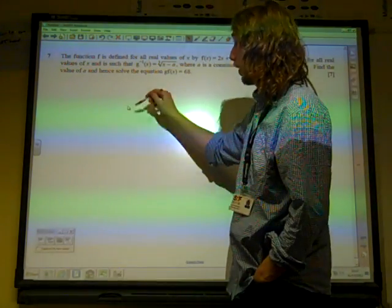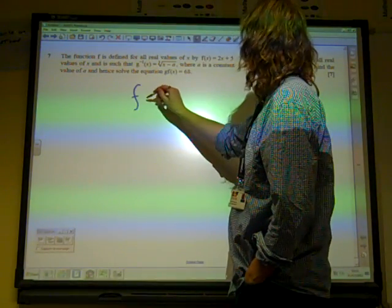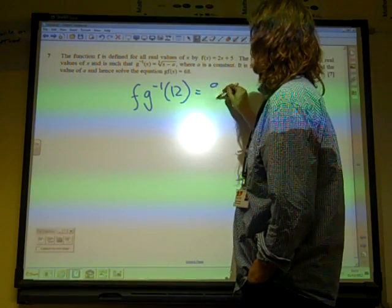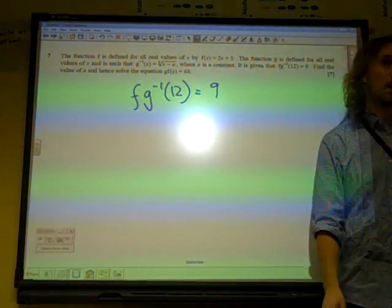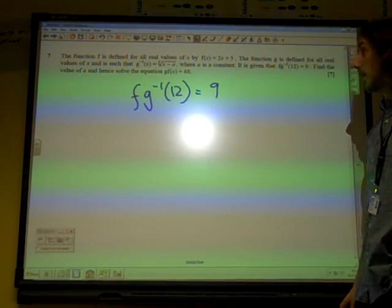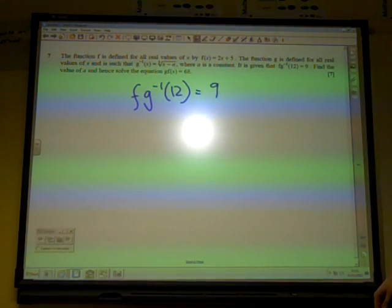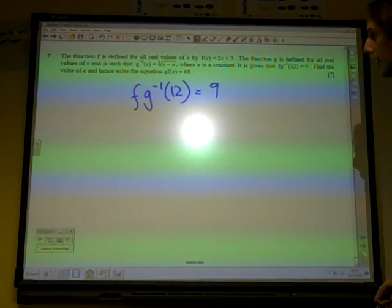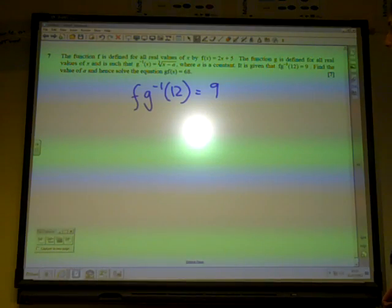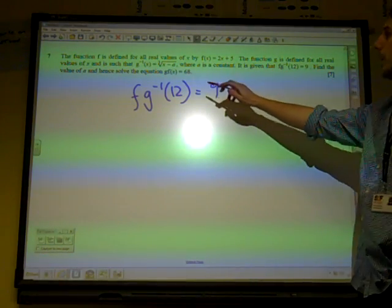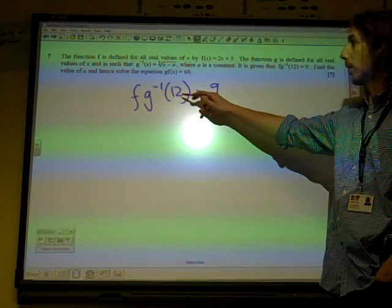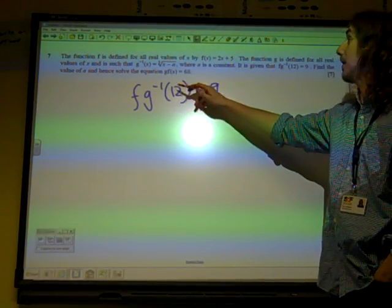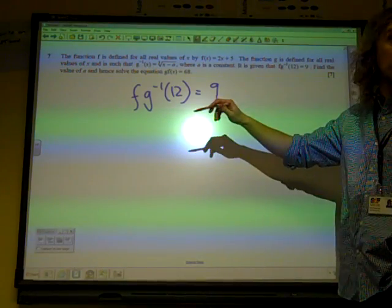We've been given some information, we've been given right at the start that f(g^(-1)(12)) is equal to 9. And actually I think we've got everything we need to know to do something with that. That means that if we put 12 into g inverse and then take that answer and put it into f, then we end up with 9. So we can work our way through that.